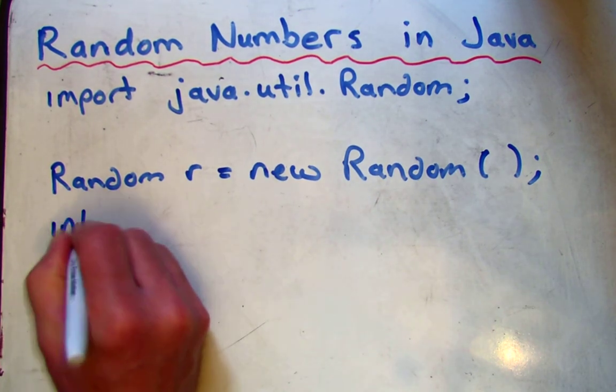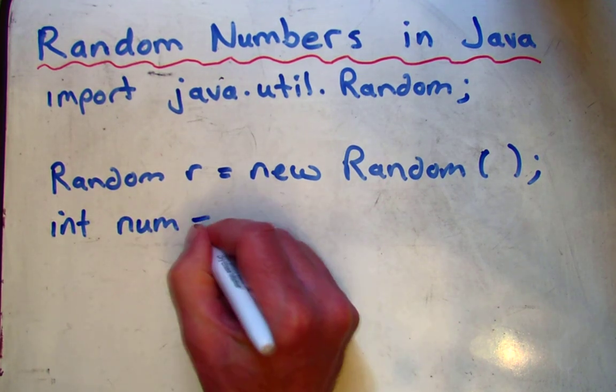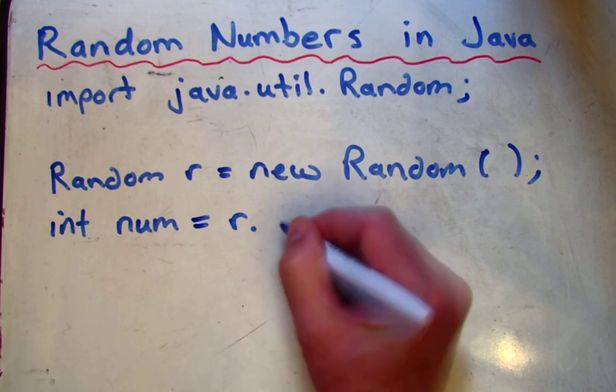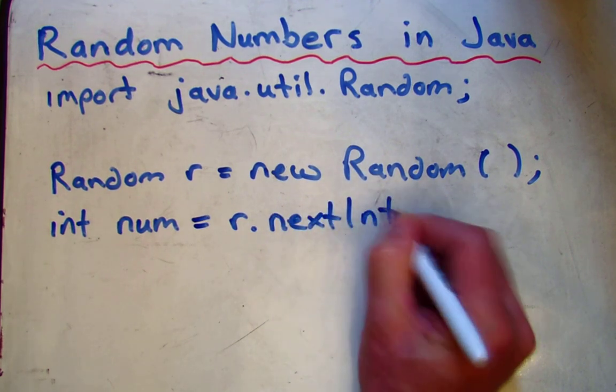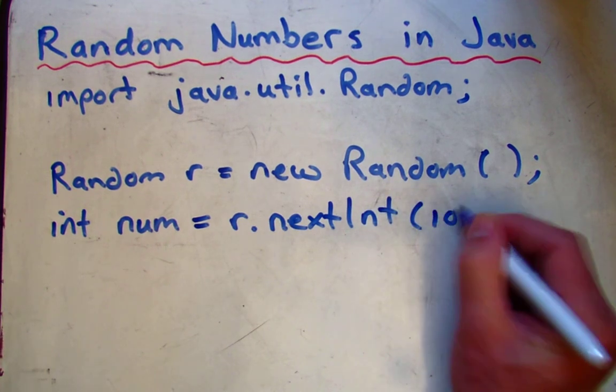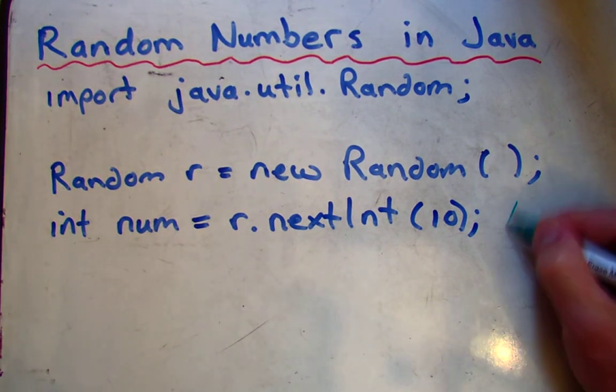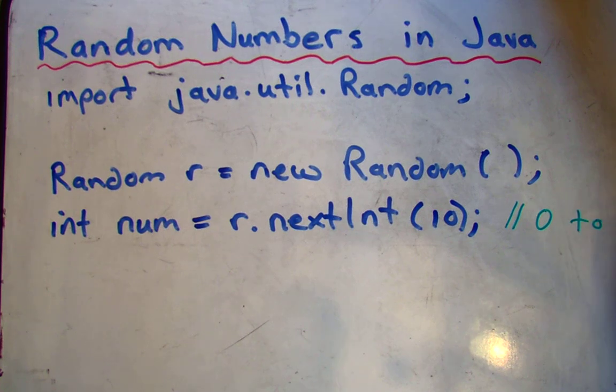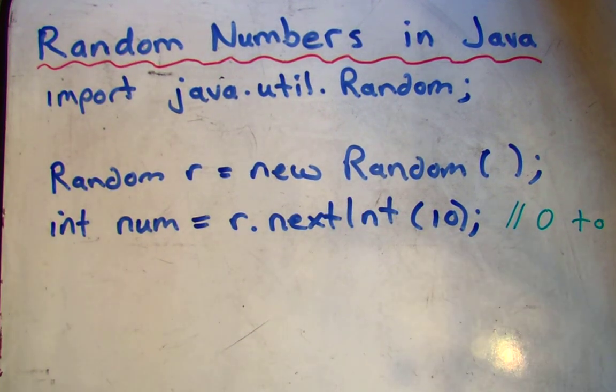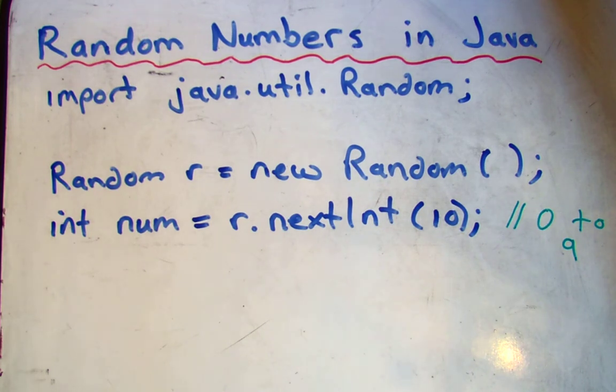So let's say I make an integer, I want to call it num, and I want it to be a number between 1 and 10. I could use my random object called R, and I can use its method called nextInt, capital I, and if I put a number in here like 10, that's going to give me a number between 0 and 9. It always starts from 0 and goes up to, but not including, this number here. So, 0 to 9.